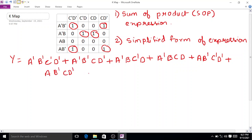So this is our final sum of product expression for the given K-map. Now here we have 6 singles, so we have got 6 minterms over here.